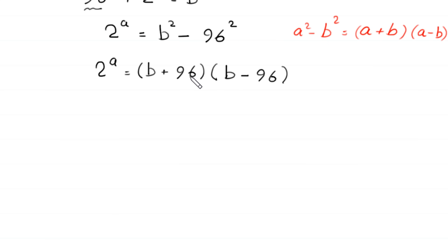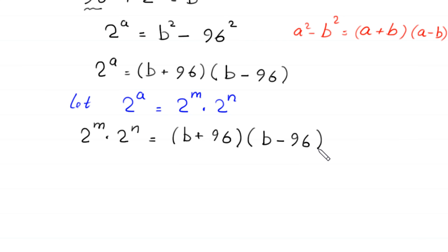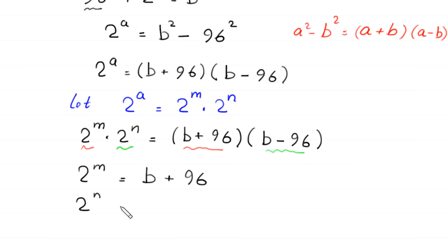Because on the right hand side we have two factors, we suppose that 2 to the power a is equal to 2 to the power m times 2 to the power n. So this equation will become 2 to the power m times 2 to the power n is equal to b plus 96 times b minus 96. From this we get two equations: equation 1 is 2 to the power m is equal to b plus 96, and equation 2 is 2 to the power n is equal to b minus 96.